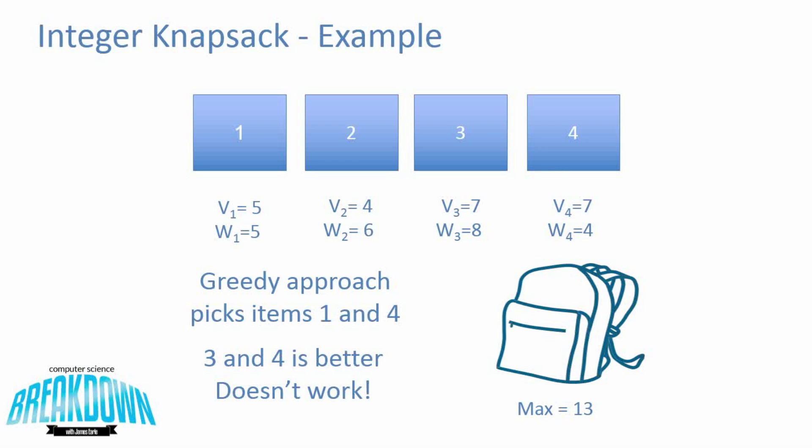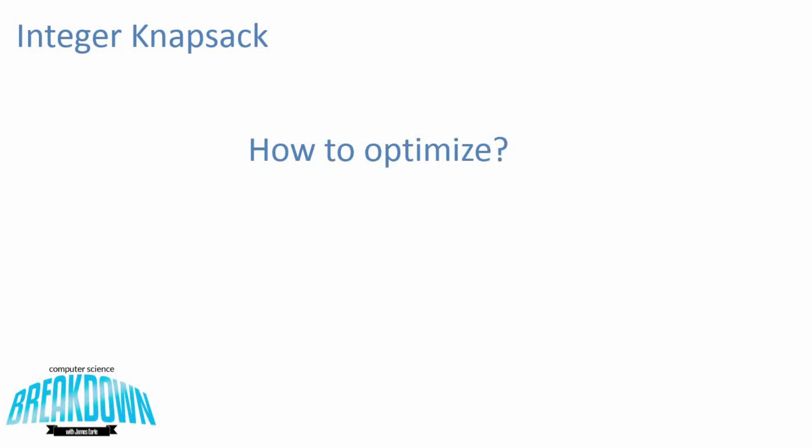So that leaves us with the obvious question: how can we optimize? Well, you can always try all of the possibilities — you can brute force it — but we know that this is an exponential problem. It's going to be O(2^N) if you try to brute force this. It might work with a few items, but if you're considering any large number of items, this is going to become quite problematic.